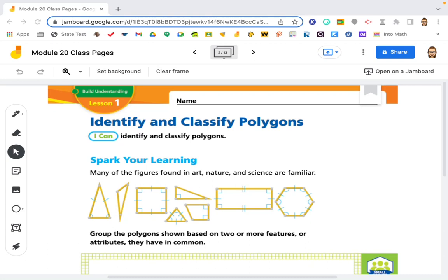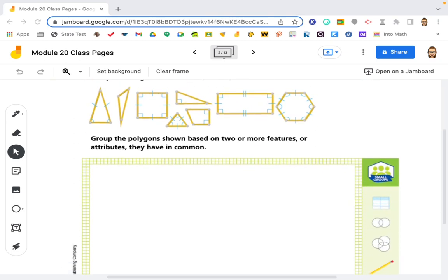So spark your learning. One of the figures found in art, nature, and science are familiar. Group the polygons shown based on two or more features or attributes that they have in common. So we're going to make a Venn diagram.